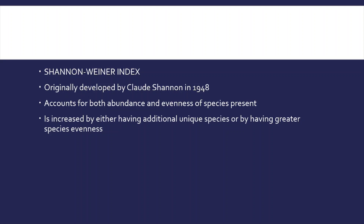The second index is the Shannon-Wiener Index. It was originally developed by Claude Shannon in 1948. It accounts for both abundance and evenness of the species present. The measure is increased by either having additional unique species or by having greater species evenness.